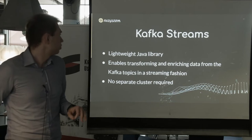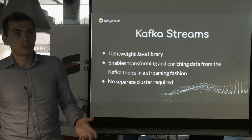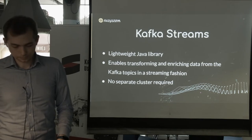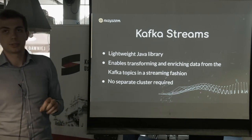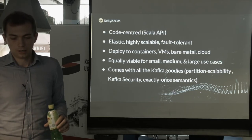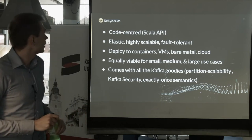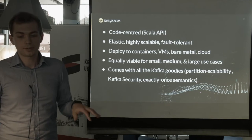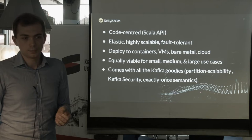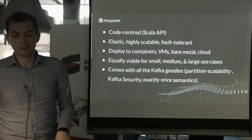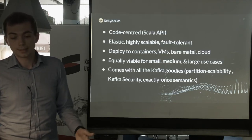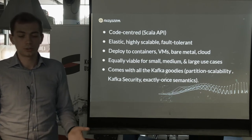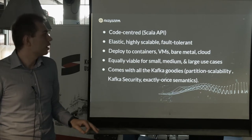What is good about Kafka Streams? There is no separate cluster required. If you compare this to Apache Spark or Apache Flink, those solutions are based entirely on a separate computational cluster. Here Kafka Streams requires no separate cluster — the only cluster required is actually an Apache Kafka cluster. This is code-centered; inside your application you have a Scala API where you define your own processing topology. There are no other dependencies than the Kafka Streams library. It's elastic, highly scalable, fault tolerant. You can deploy it to containers, virtual machines, bare metal, or cloud — you deploy it the same way you deploy your own application to production.